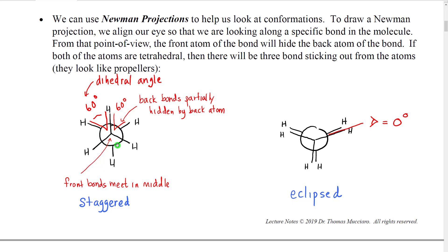The back atom would be completely hidden by the front atom, and the three bonds on the back atom would be partially hidden. In this picture, the dot represents the front atom with three bonds connected to it. The big circle represents the back side of the back atom, and the three bonds that don't connect in the middle are the bonds connected to the back atom. Using this structure, we can get a very good idea of the angle between a given bond attached to the front atom and an adjacent bond attached to the back atom. We call this angle the dihedral angle.